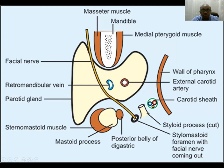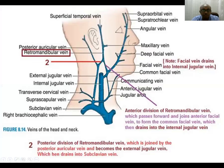The retromandibular vein is a continuation of the external jugular vein. The external jugular vein divides into the retromandibular vein and the posterior auricular vein. This retromandibular vein goes through the parotid gland and continues as the superficial temporal tributaries.